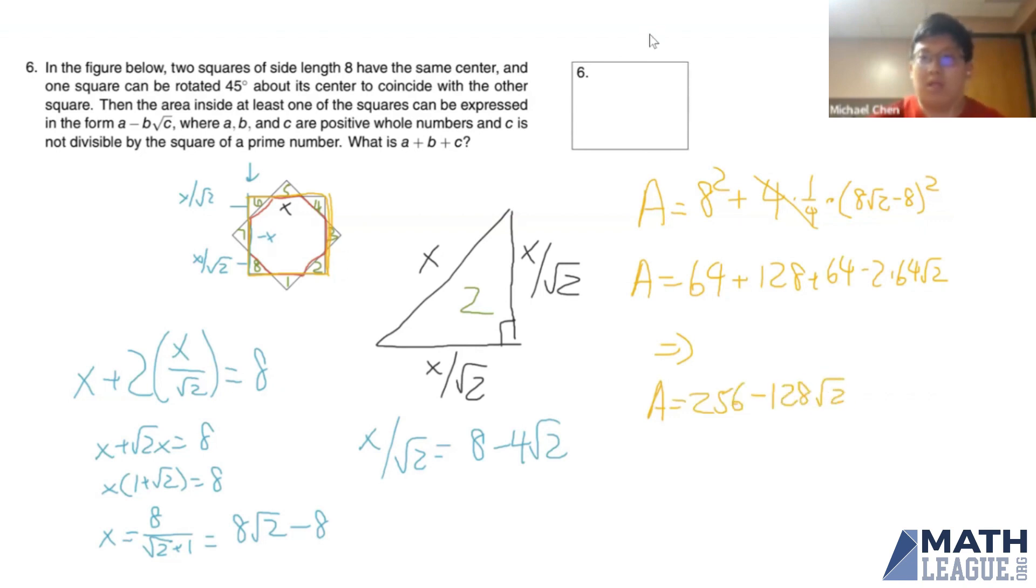Now, this isn't our answer because our answer needs to be number one, an integer, but number two, the question tells us that this area is in the form of a minus b root c, which means therefore that since 2 is already square free, we know that a is equal to 256.